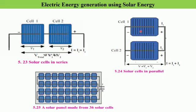Here we have cell 1 and cell 2 connected in parallel combination. I1 is the current flowing through cell 1 and I2 is the current flowing through cell 2. The potential difference across both cells will be equal, so V total = V1 = V2.